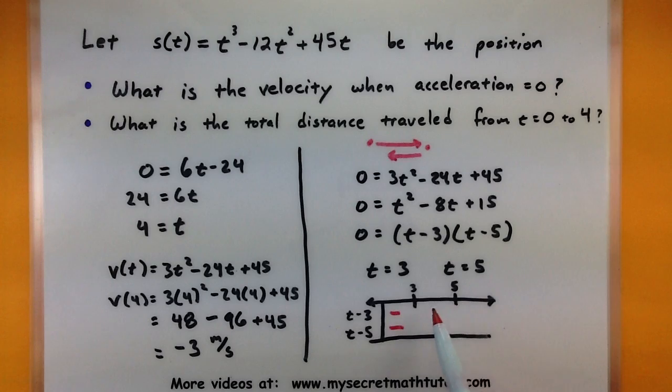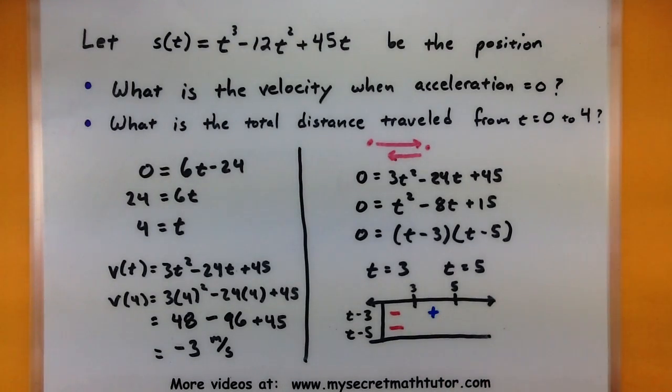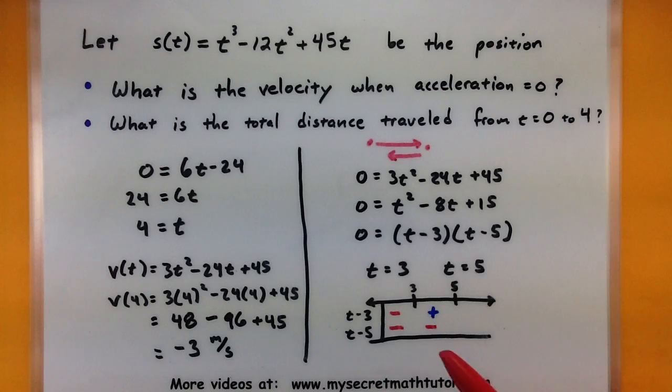Alright, now testing something between 3 and 5, maybe like the number 4. If I plugged it into here, 4 - 3 would give me a positive value. But 4 - 5 would give me a negative value. Alright, and lastly, something greater than 5, maybe something like 6 into each of these portions of my velocity. It looks like both of them would be positive.